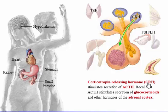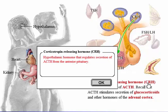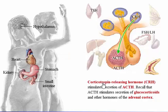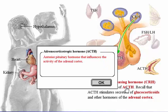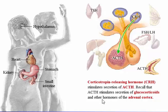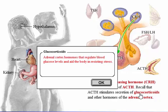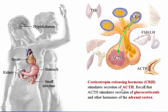Corticotropin-releasing hormone (CRH) stimulates secretion of adrenocorticotropic hormone, or corticotropin (ACTH). Recall that ACTH stimulates secretion of glucocorticoids and other hormones of the adrenal cortex.